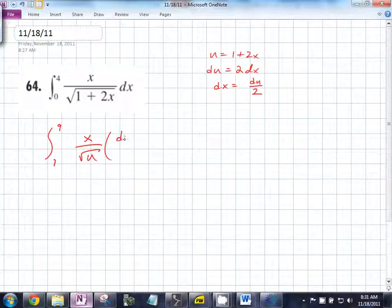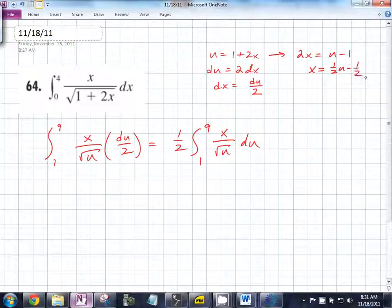What can we factor out to the front? So we end up with this, but what's the problem? There's an x. That magical canceling didn't happen, but what do we still know? What does this mean? So therefore, 2x is equal to u minus 1. So what does x equal? 1 half u minus 1 half. So what can we substitute in?